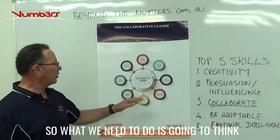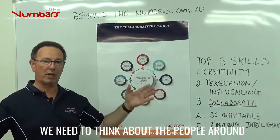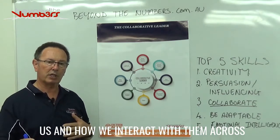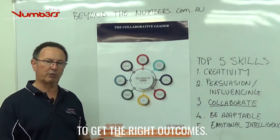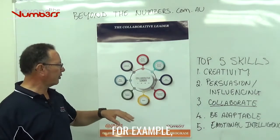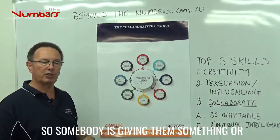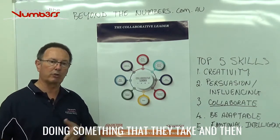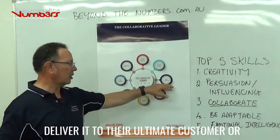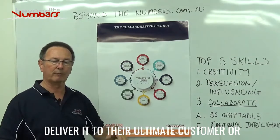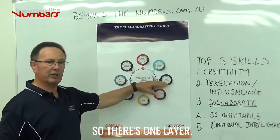So what we need to do, if we're going to think as a collaborative leader, is think about the people around us and how we interact with them across functional groups to get the right outcomes. A collaborative leader has peer suppliers — generally in any process somebody is giving them something that they then take and do something else with, so they can deliver it to their ultimate or peer customer. That's one layer.